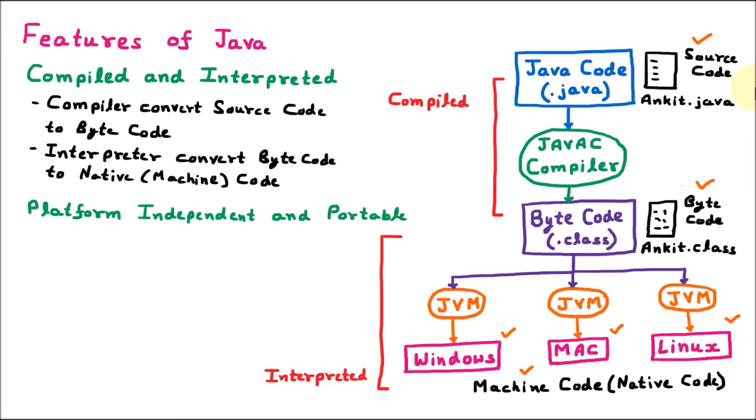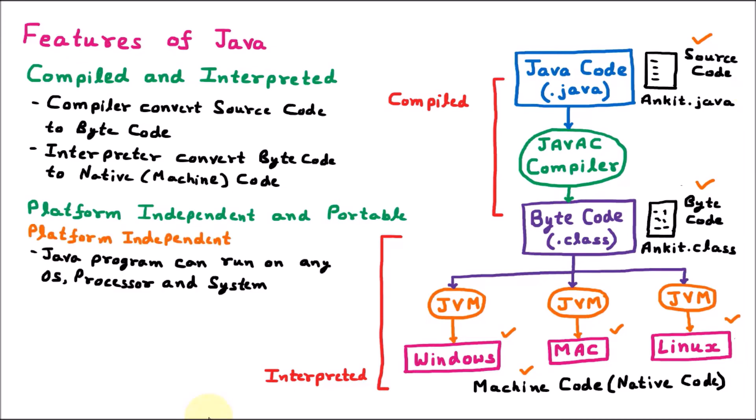A Java program can run on any OS, processor, and system. In Java, the source code is first converted to byte code. This byte code nobody can read — it is very much secure. So it is easy to send the byte code from one system to another. That's why it is portable. A Java program can be moved from one computer to another. That's why Java programs are portable.